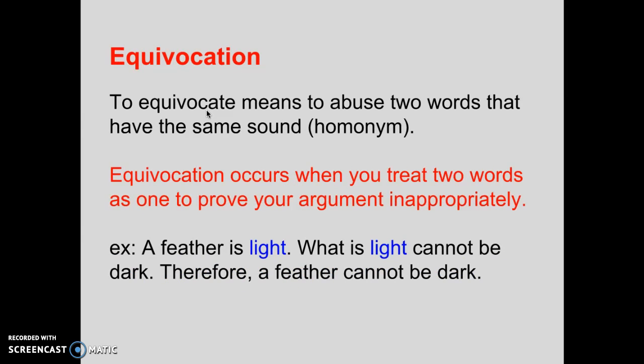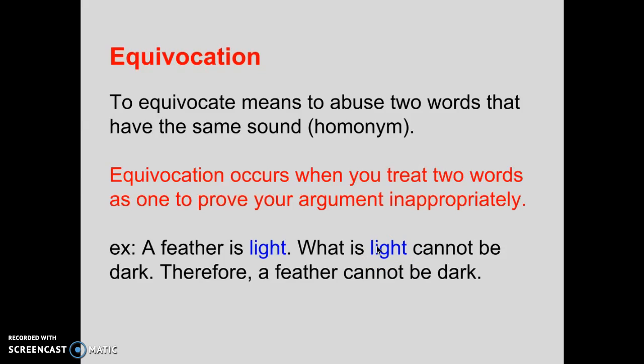The next fallacy is equivocation. There's a classical historical definition: to equivocate is to assert a half-truth with the intention of misleading the listener — a broad term for telling partial truths to confuse and lie, which you encountered in the play Macbeth. We're going to talk about equivocation in a very strict and narrow modern sense: to equivocate means to abuse two words that have the same sound. Equivocation occurs when you treat two words as one to prove your argument inappropriately. For example: 'A feather is light. What is light cannot be dark. Therefore, a feather cannot be dark.' Here the word 'light' is being used in two different ways. You would be surprised how often equivocation occurs throughout argumentation.